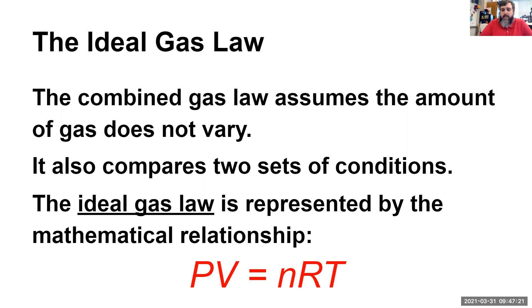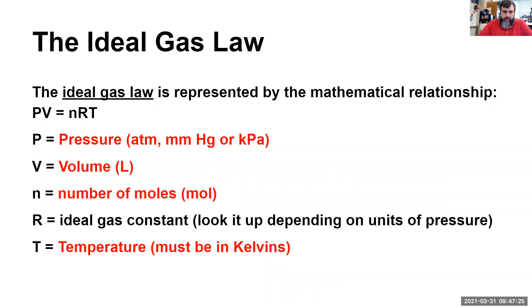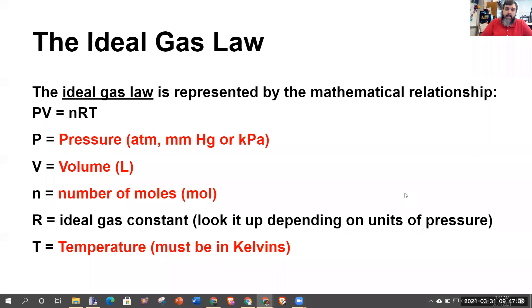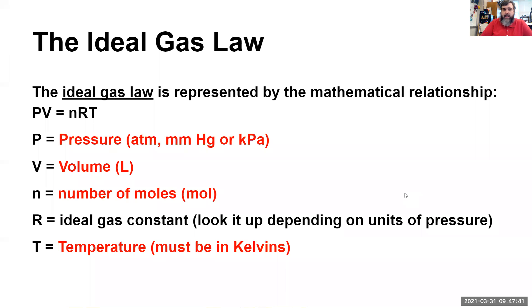But you hear PV equals nRT is what we're dealing with here. P, of course, stands for pressure. Now, it's important to note that pressure has many units, and it is not limited to just these three, but these are pretty typical: atmospheres or millimeters of mercury or kilopascals. Do be aware, of course, that a millimeter of mercury is the same thing as a torr.